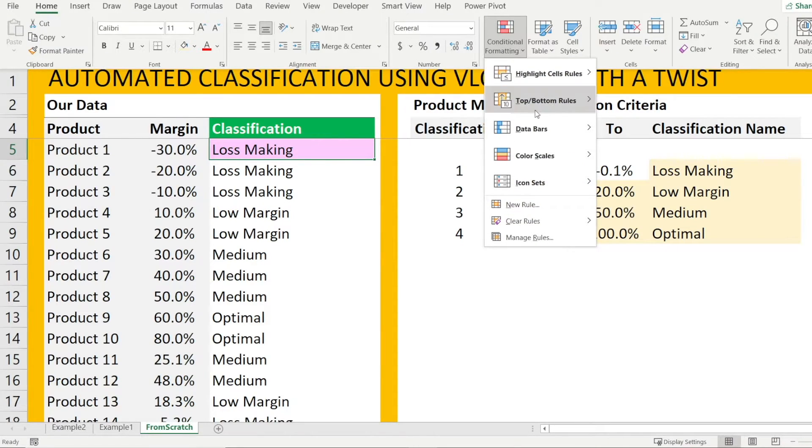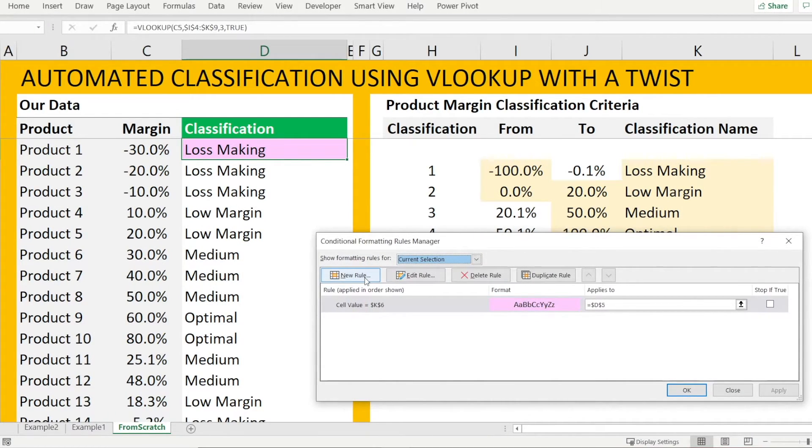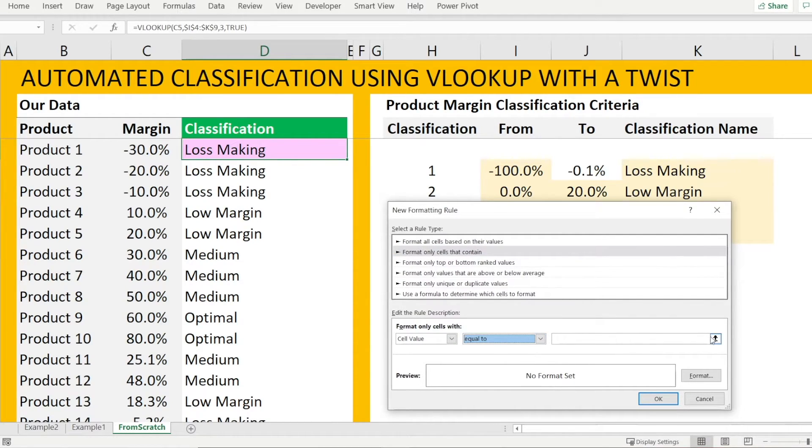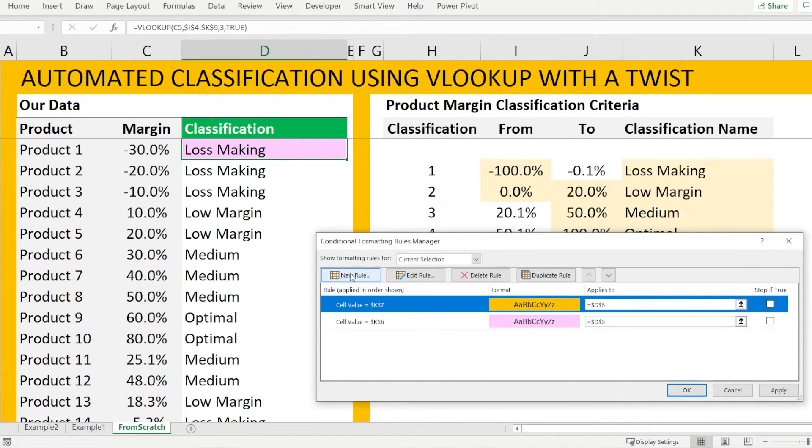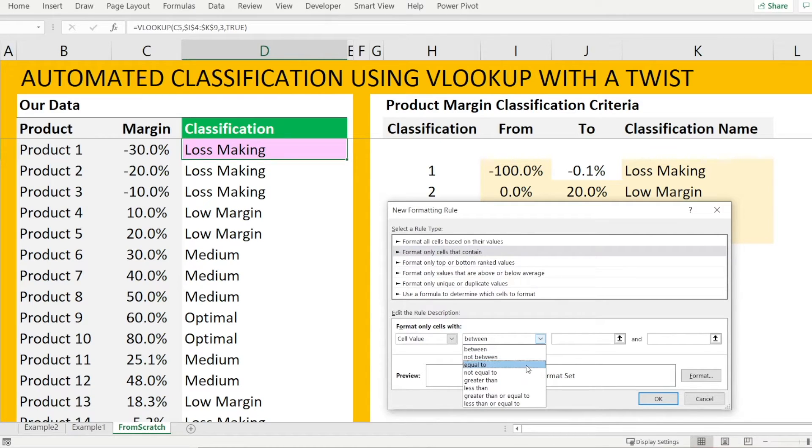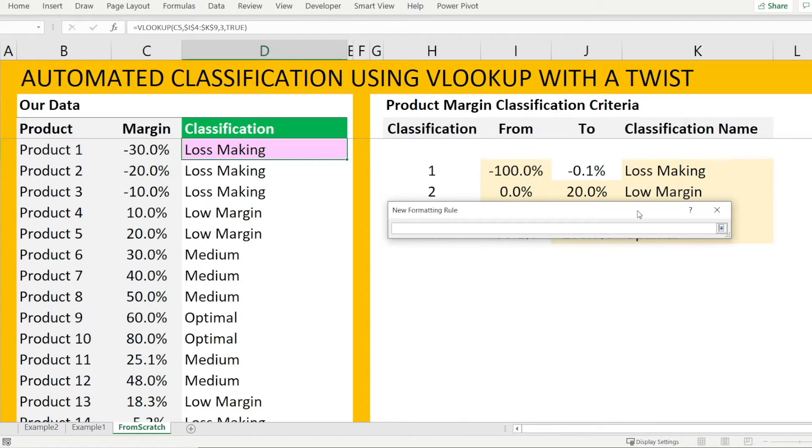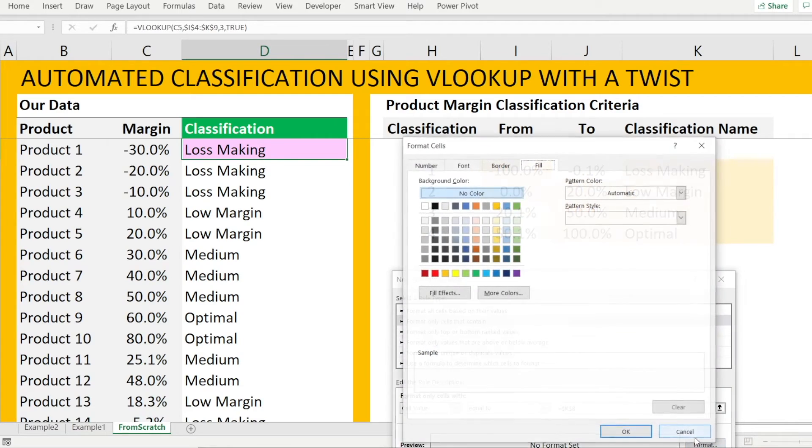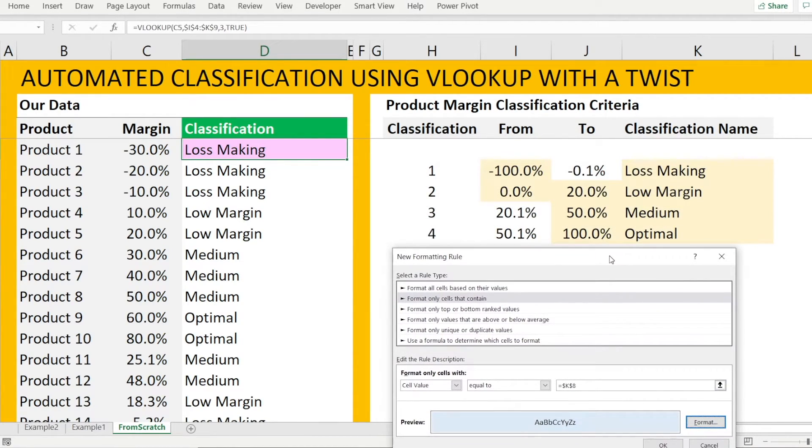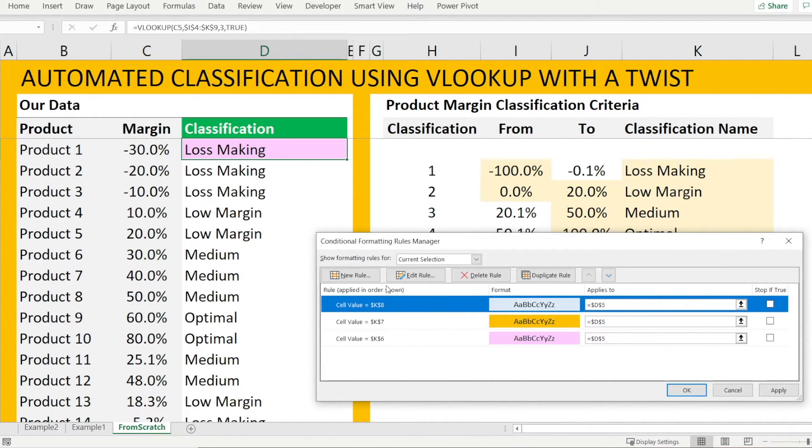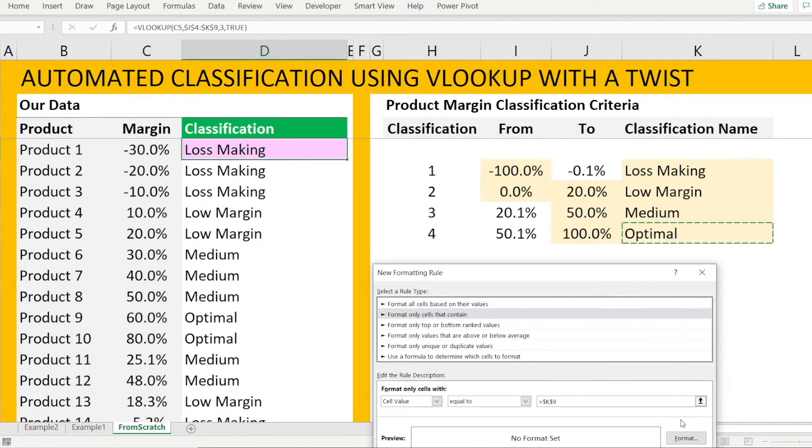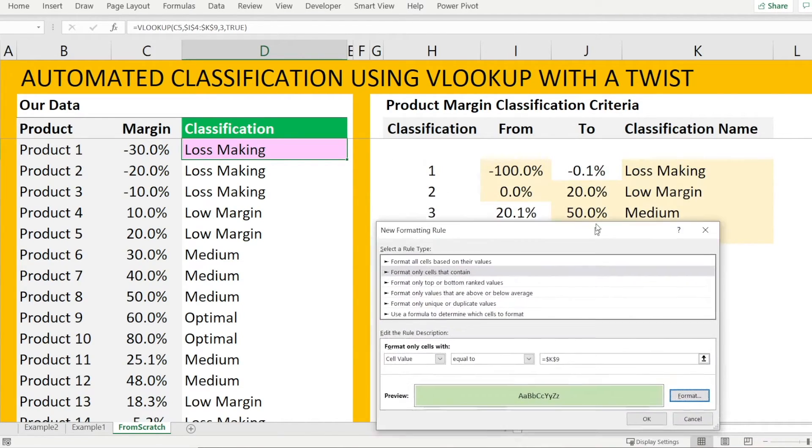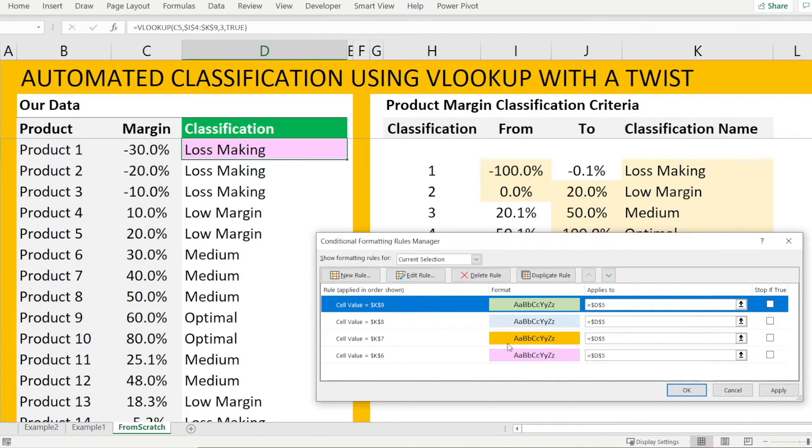Now, but we need more. Because we also want to add criteria that say if the cell value is equal to low margin, I want the color to be orange. And one more. If the cell contains a value which equal to medium, I want that to be blue. And then the last one, hit new rule again. If the cell value contains or equal to optimal, let's make it green. And hit apply. So that's our rules. The four color.